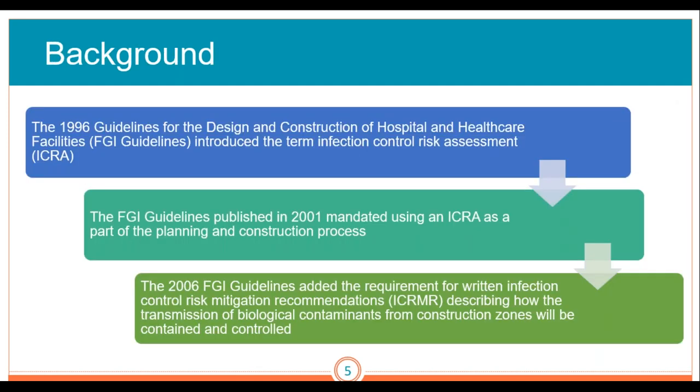So let's go through a little bit of the history and background. The 1996 guidelines for the design and construction of hospital and healthcare facilities introduced the term infection control risk assessment — the ICRA. The FGI guidelines published in 2001 mandated using an ICRA as part of the planning and construction process. In 2006, the FGI guidelines added the requirement for written infection control risk mitigation recommendations — the ICRMR — describing how the transmission of biological contaminants from construction zones will be contained and controlled. These are supposed to be renewed around every four years. The most recent ones are from 2018, but there are still a lot of people who are following the 2014 FGI guidelines.